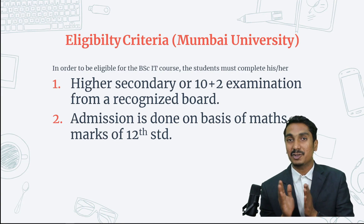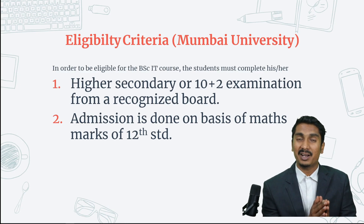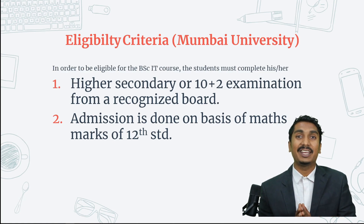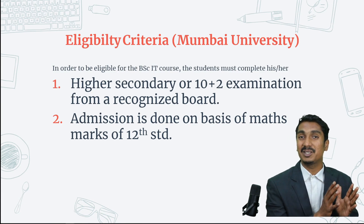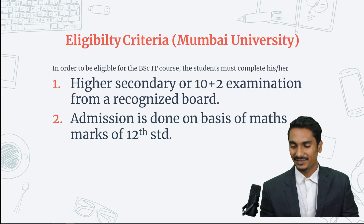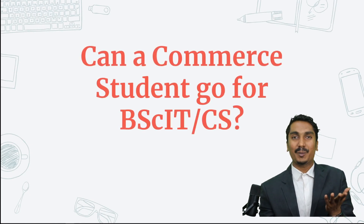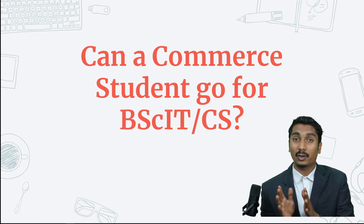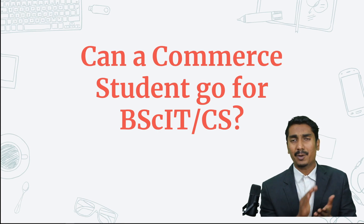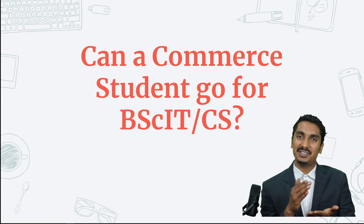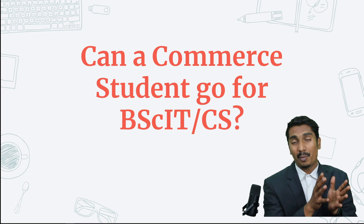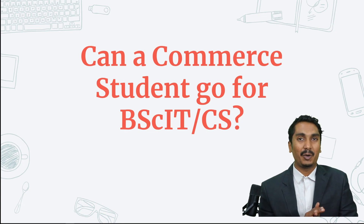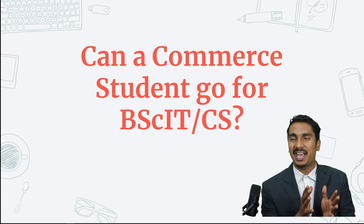If you have good marks in Maths at 12th standard, you can get into a good college. BSc Computer Science requires a good percentage overall, while BSCIT also requires a good percentage in 12th standard with Maths. Can a commerce student go for BSCIT or Computer Science? Definitely yes — a commerce student can apply for BSCIT, but only if they had Maths as a subject. For BSc Computer Science, having studied Science with Maths in 11th and 12th is applicable.